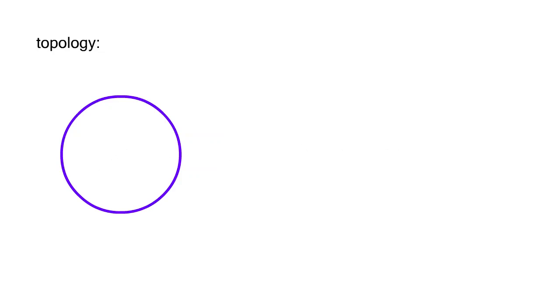Topology is like traditional Euclidean geometry, but with the rules bent a little. In topology, this is a circle, but this is also a circle, and this is one too.